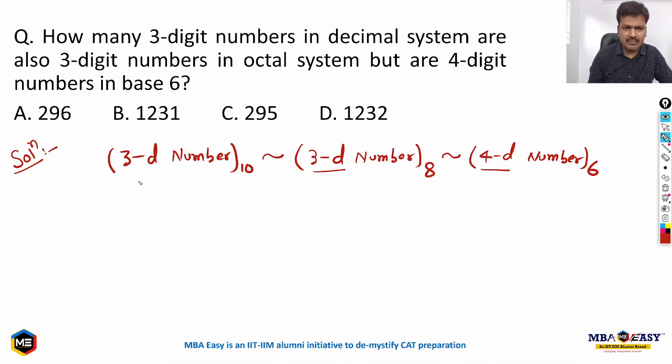We know that 3-digit numbers in base 10 start from 100 and go up to 999, so my number has to be in this range. We also know that 3-digit numbers in base 8, when converted into base 10, start from 8 squared, which is 64.